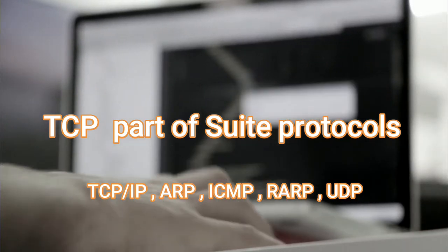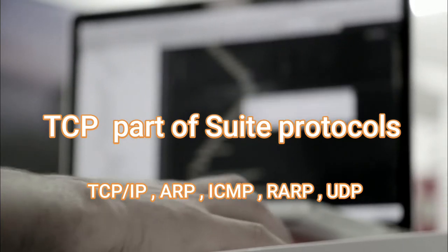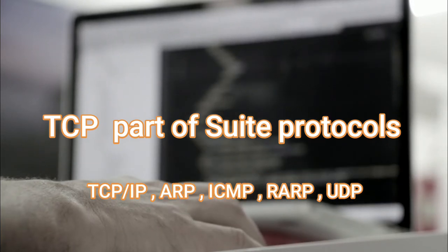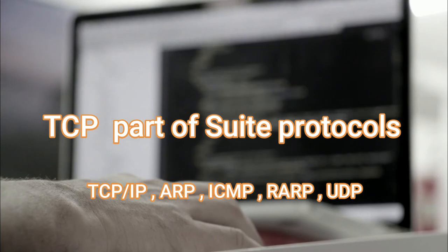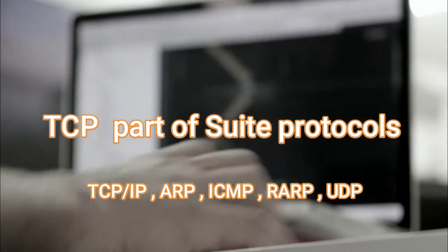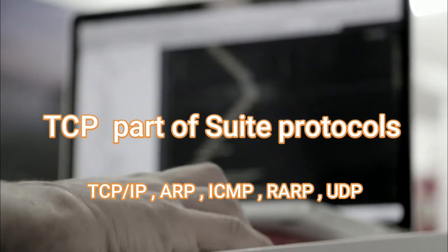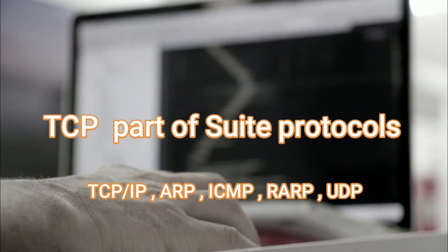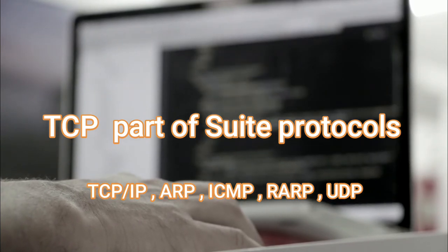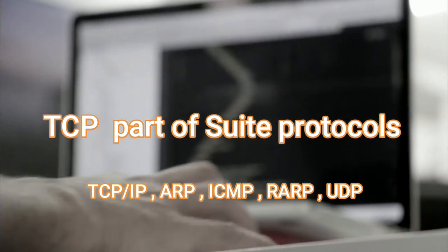The TCP/IP model consists of several types of protocols, including TCP, IP, Address Resolution Protocol (ARP), Internet Control Message Protocol (ICMP), Reverse Address Resolution Protocol (RARP), and User Datagram Protocol (UDP).